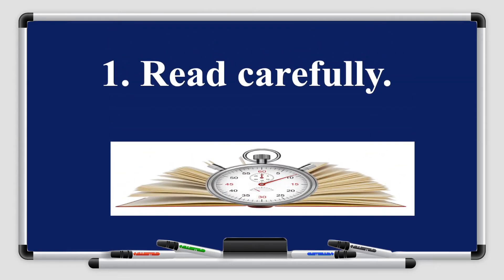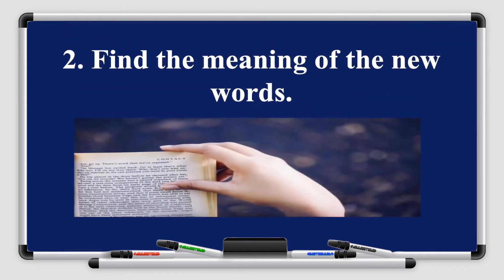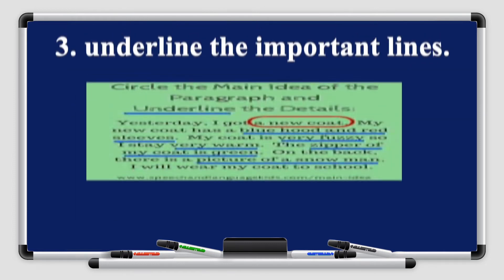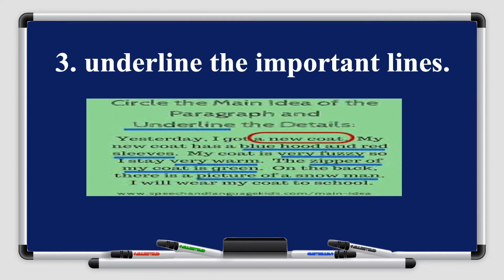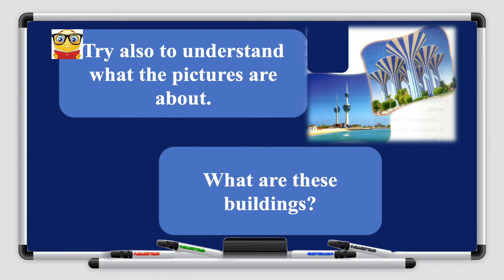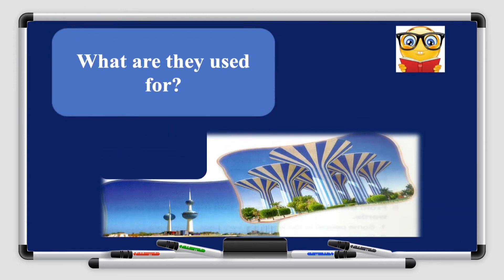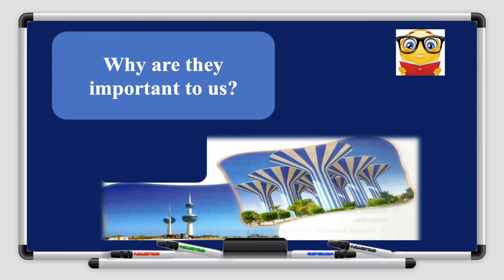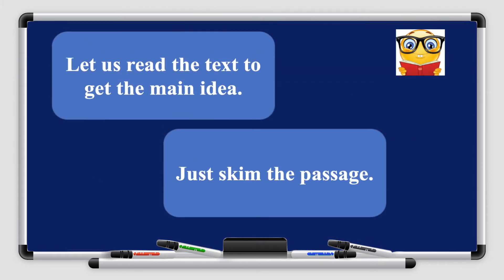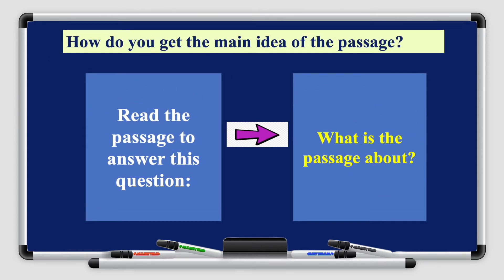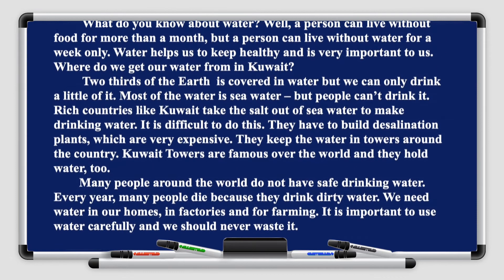I want you to read carefully, find the meaning of the new words, and underline the important lines. Try also to understand what the pictures are about. What are these buildings? Have you ever seen them before? What are they used for? Why are they so important to us? Let us read the text to get the main idea — just skim the passage. How do you get the main idea of the passage? You should read the passage to answer this question: what is the passage about? Let's read together.